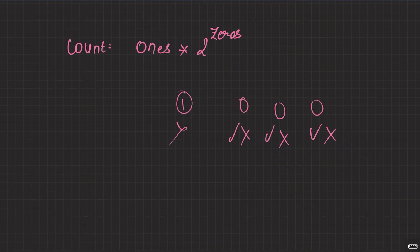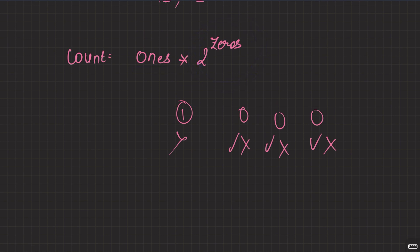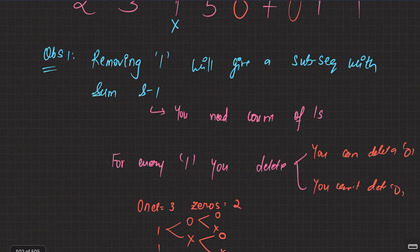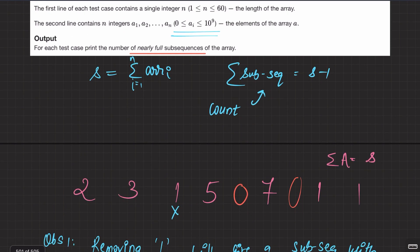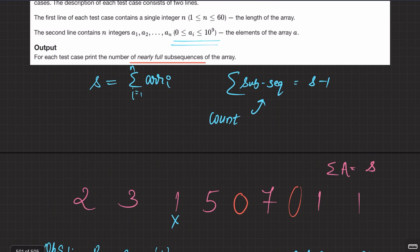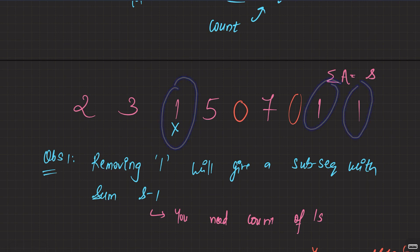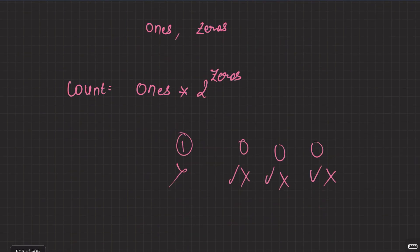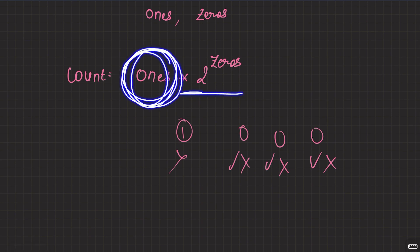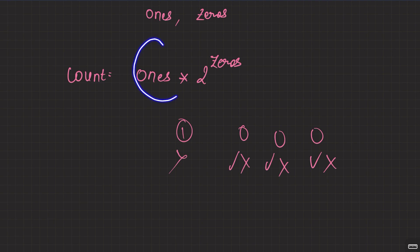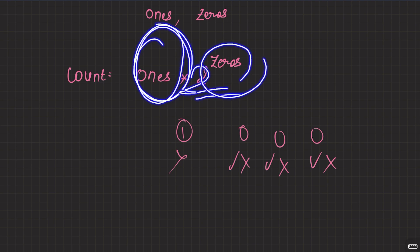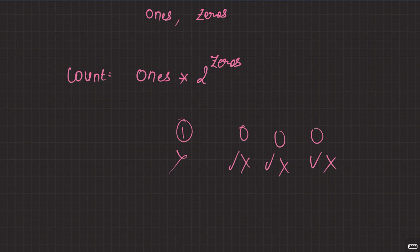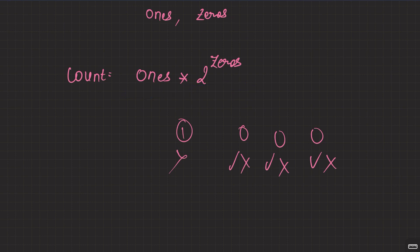So, to summarize: you are after subsequences whose sum equals S-1. The easiest candidate to delete is a 1. For every one deleted, for each zero in the array you have two options — pick it or not pick it. So the total answer is: number of ones × 2^(number of zeros).